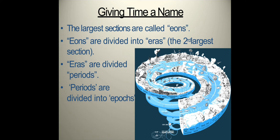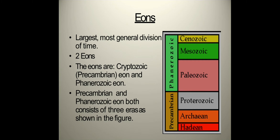Giving time a name — there are different divisions and subdivisions of the geologic time scale. The primary and largest divisions of time are the eons. Eons are divided into eras, the second largest section. Eras are divided into periods. Periods are divided into epochs, the smallest section. Let us now discuss the different divisions and subdivisions of the geologic time scale.